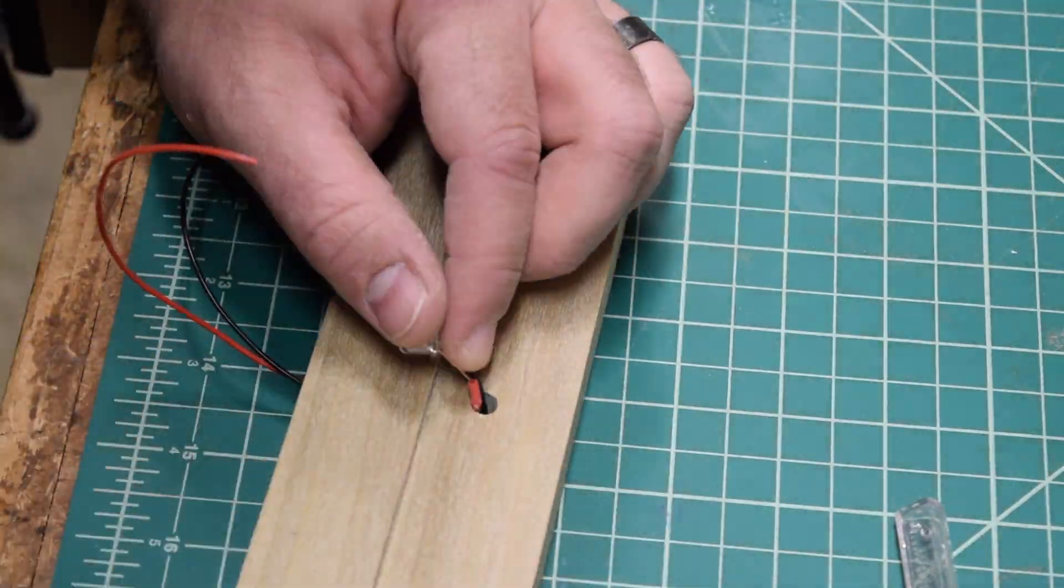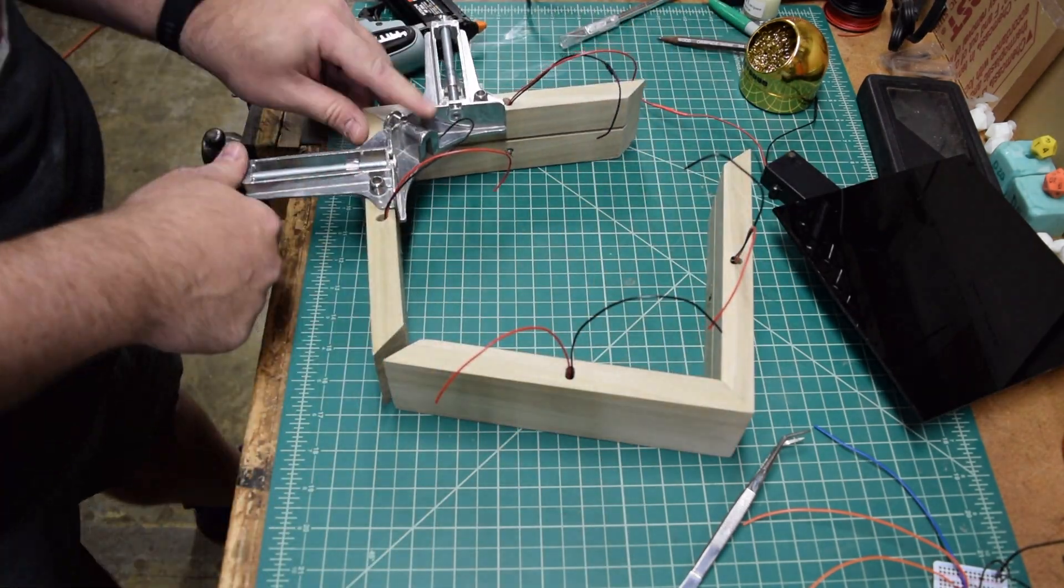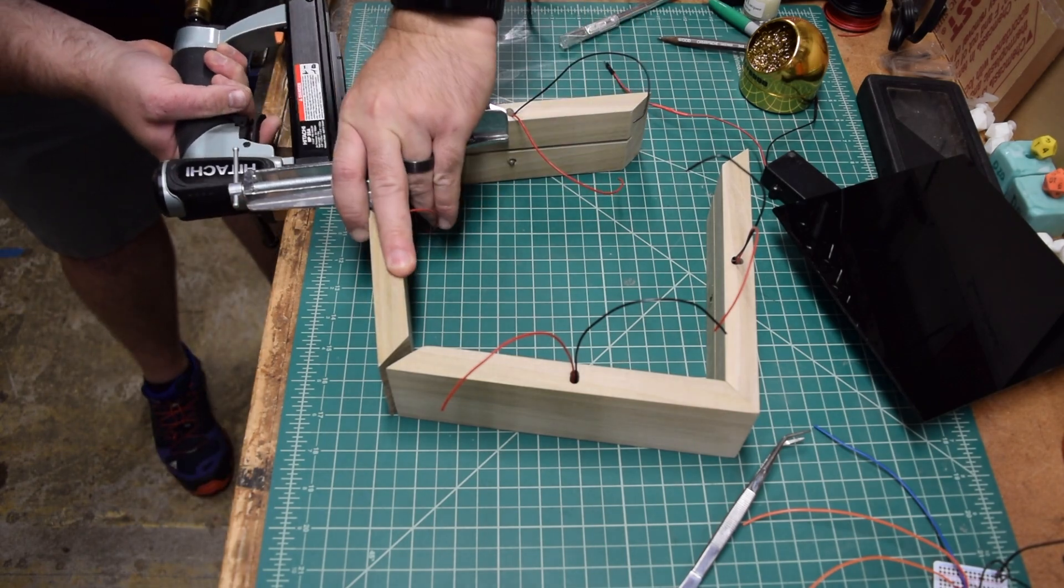Some glue cleanup was required. Once the LEDs were in place, the box was brad-nailed together using a corner clamp to help keep things square.